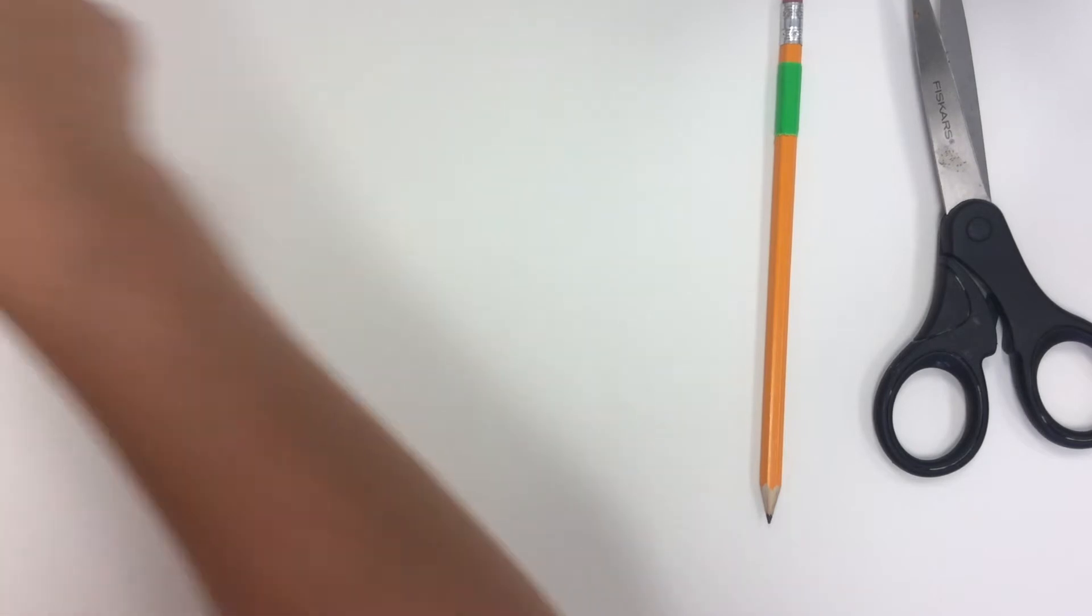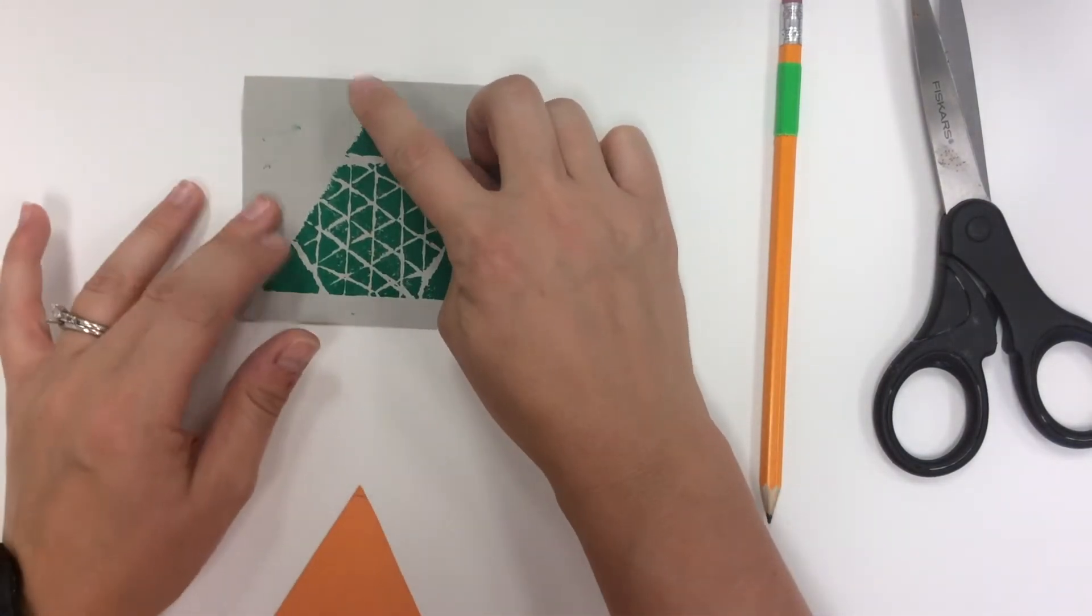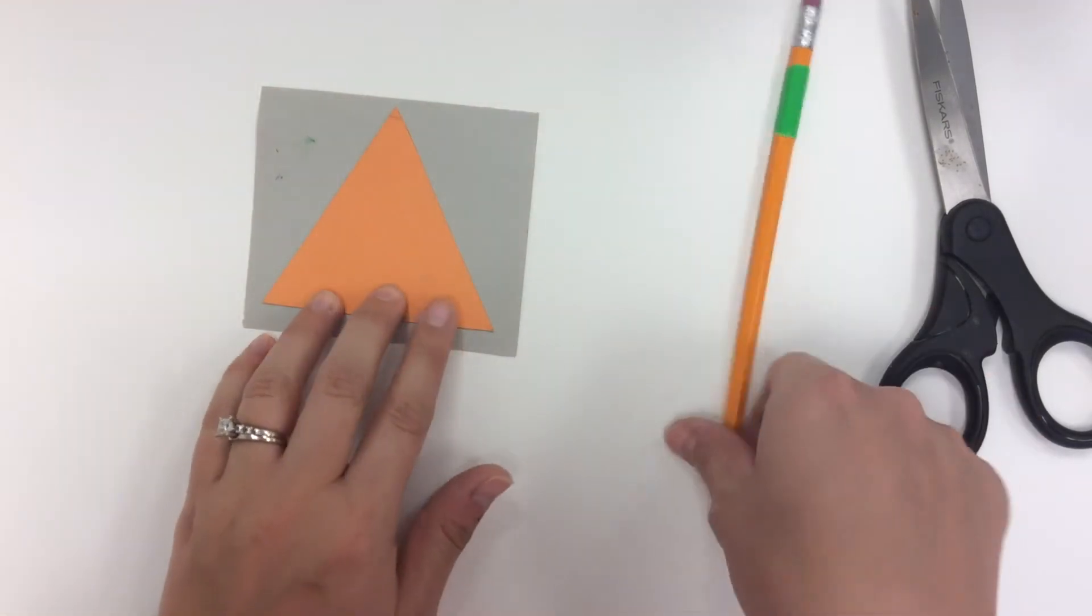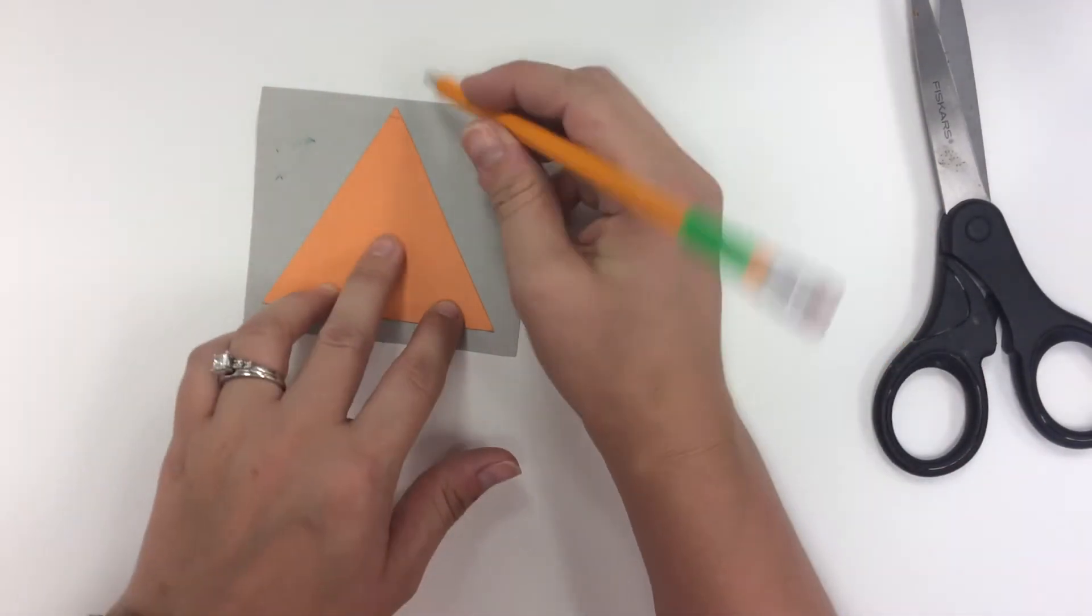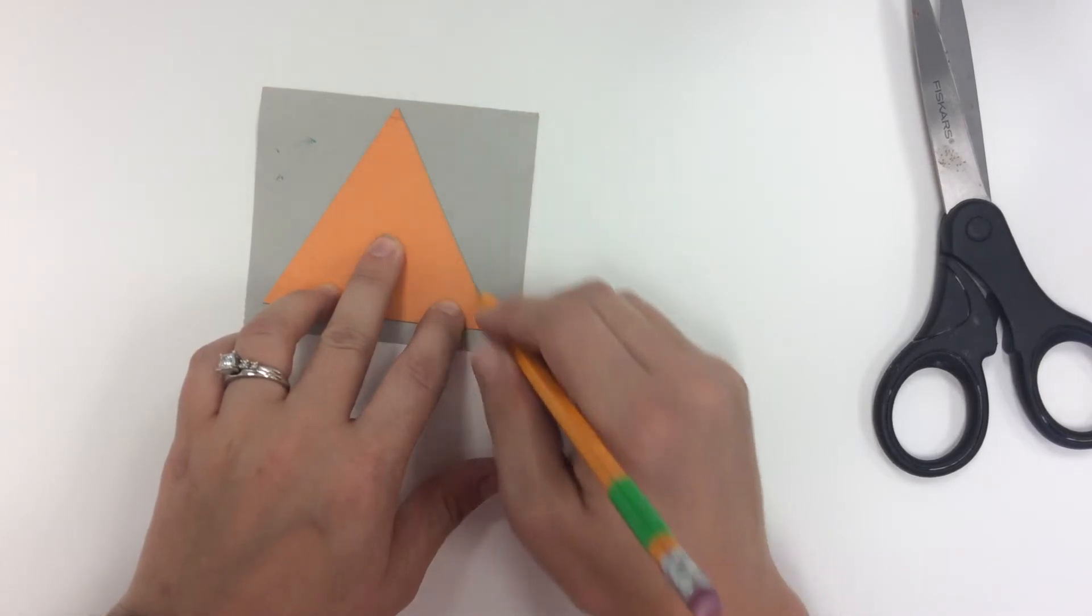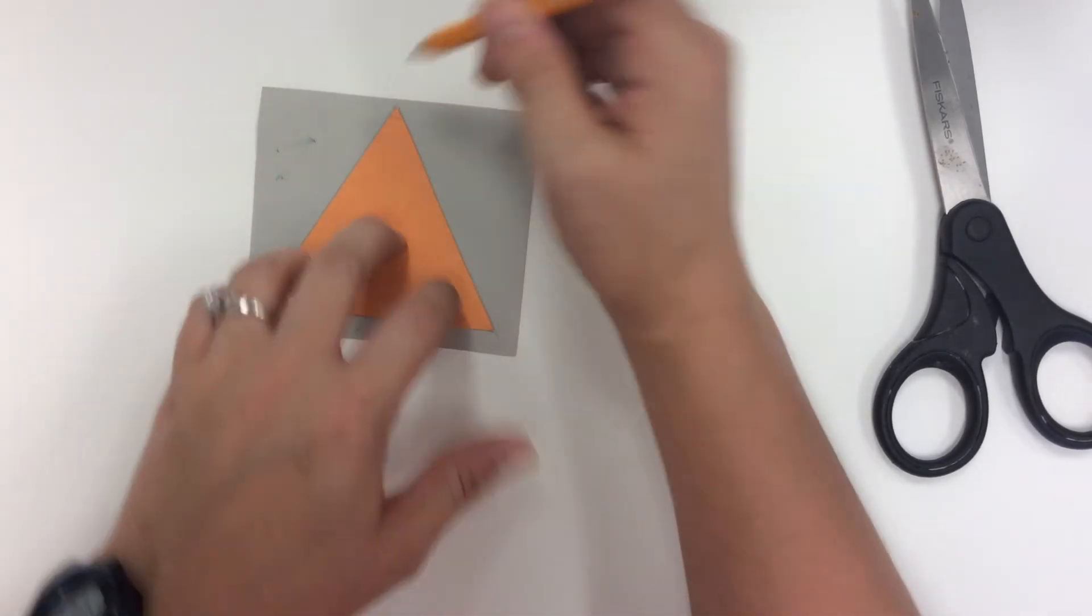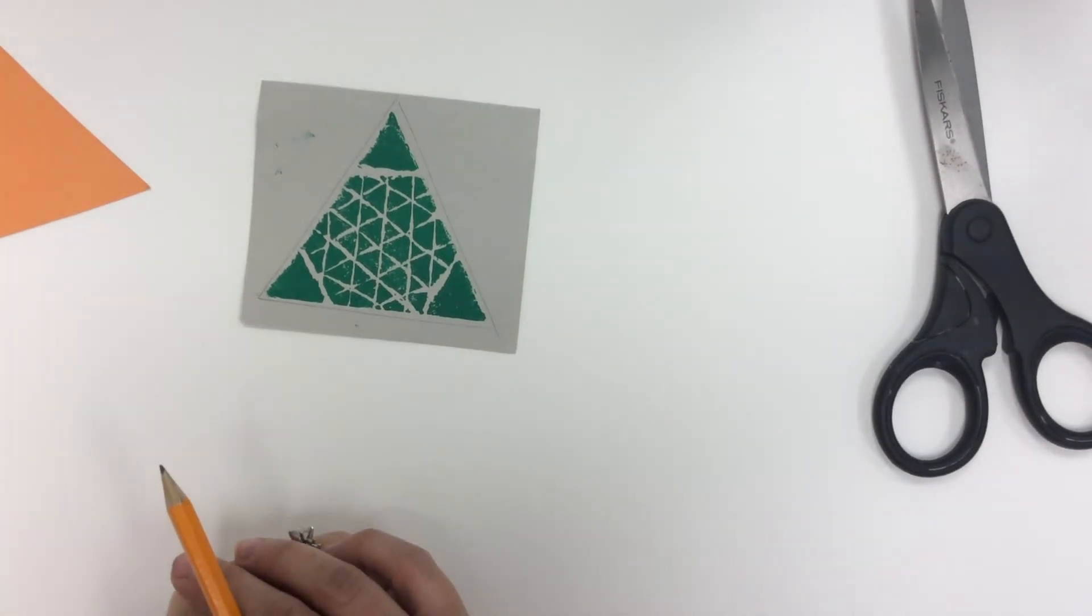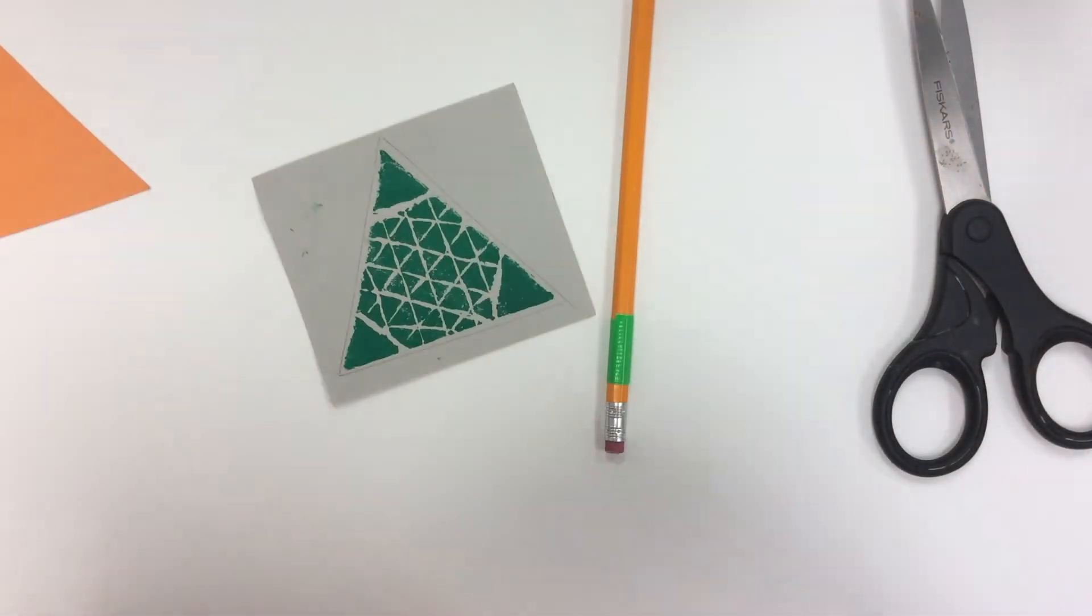If, for some reason, your design does not reach all the way to the corners, hopefully you have traced around your printing plate as you've been printing. But if you haven't, you can take your pencil, trace around your triangle over the top of your design, and then cut it out. So that is your next step on your polyhedron.